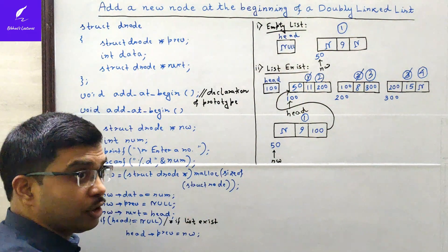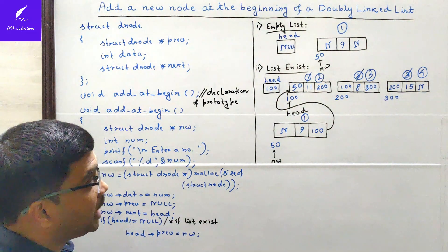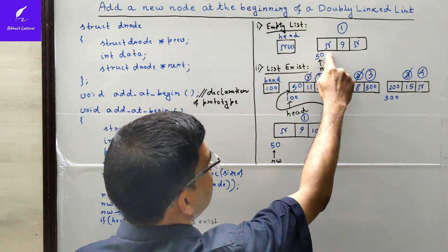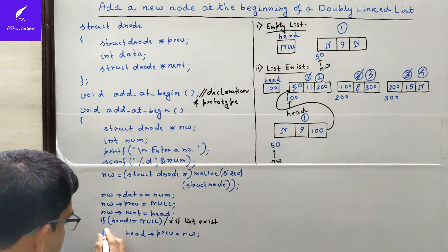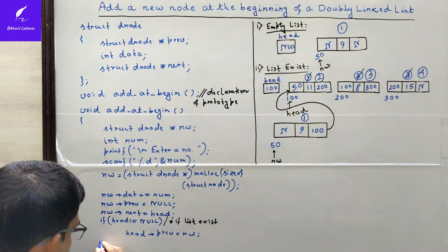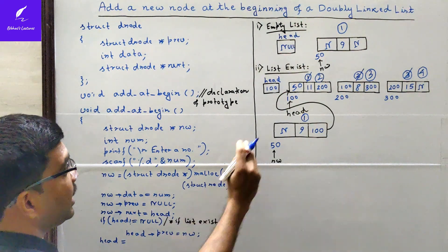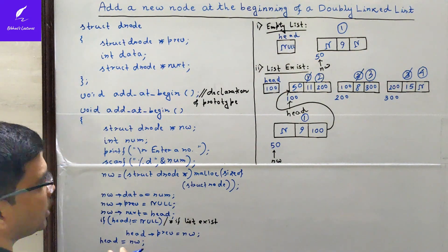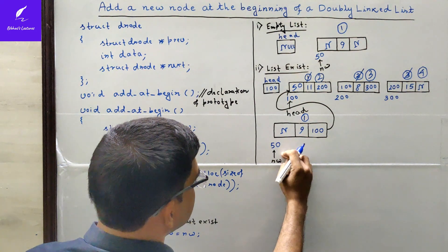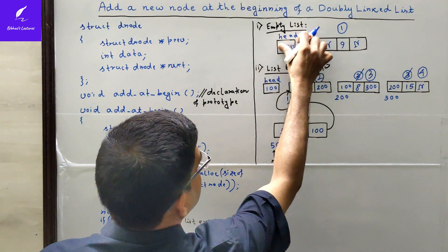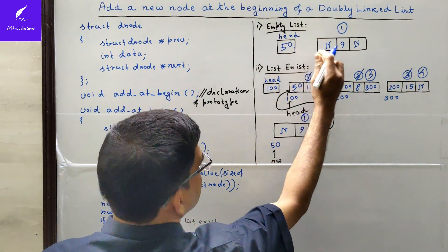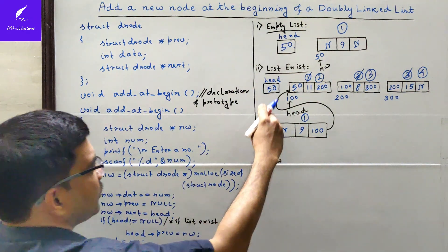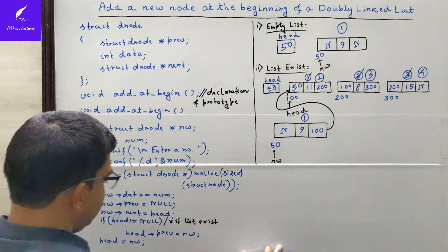Finally, we have to update the head pointer, because we inserted the new node at the very beginning of the list and head must always point to the first node. So we write head = nw. Now head contains 50, the address of the new node. This works for both the empty and existing list cases — in both cases, head is updated to point to the newly inserted first node.